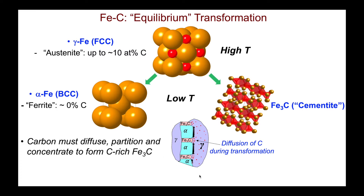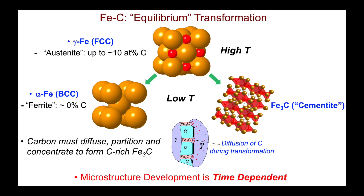Here's a cartoon of how this transformation occurs. Here's our gamma FCC form of iron with the interstitial carbon distributed homogeneously throughout it. It must now segregate and concentrate into the regions that can form the Fe3C phase, with the alpha-BCC form being essentially carbon-free. These rearrangements and concentrations of carbon require reasonably long-range diffusion and will take time. So the microstructure development — the growth of these new phases, which often grow side by side in so-called lamellar structures — is time dependent and will depend on the cooling rate.